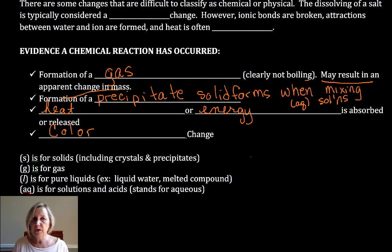Okay. So remember I said we use symbols for meaning. And so if we have a solid, whether it's crystals or a precipitate or a powder, we're going to use parentheses S, parentheses G for gases, parentheses L for pure liquids.